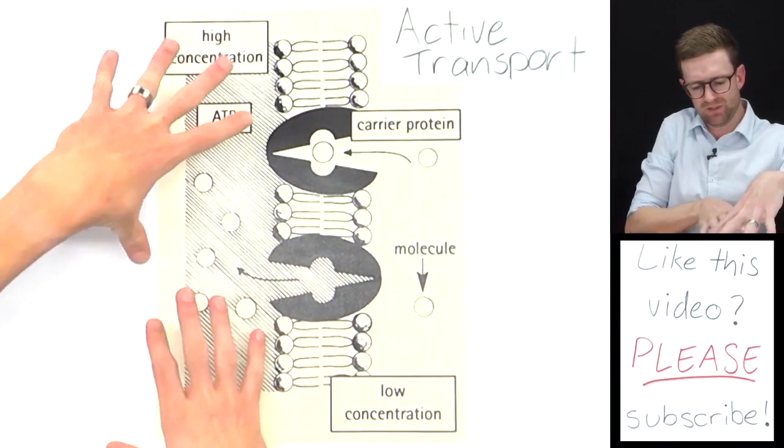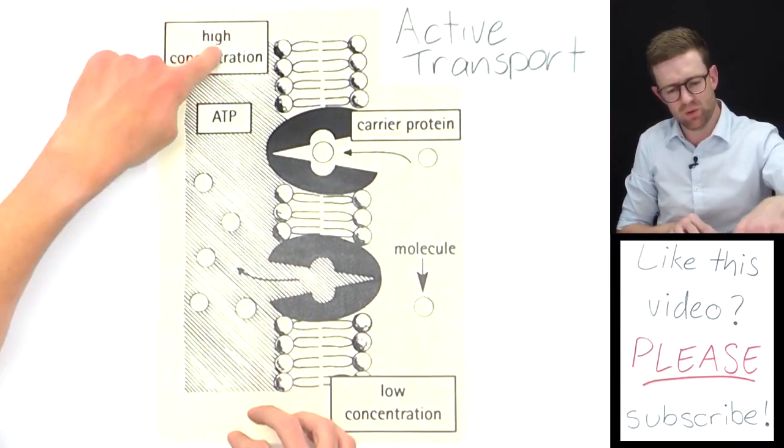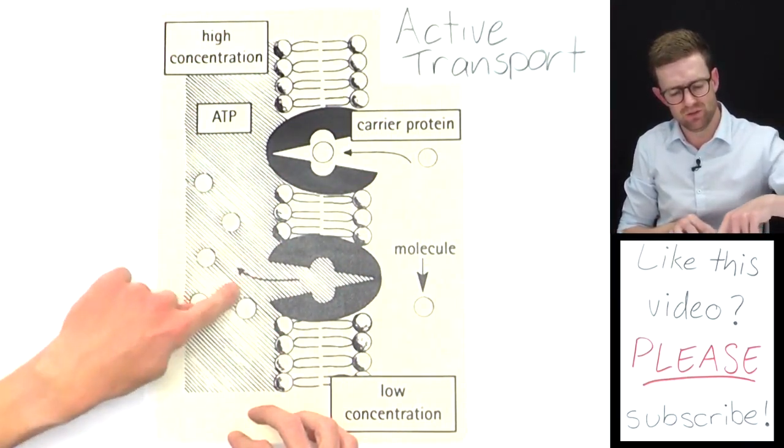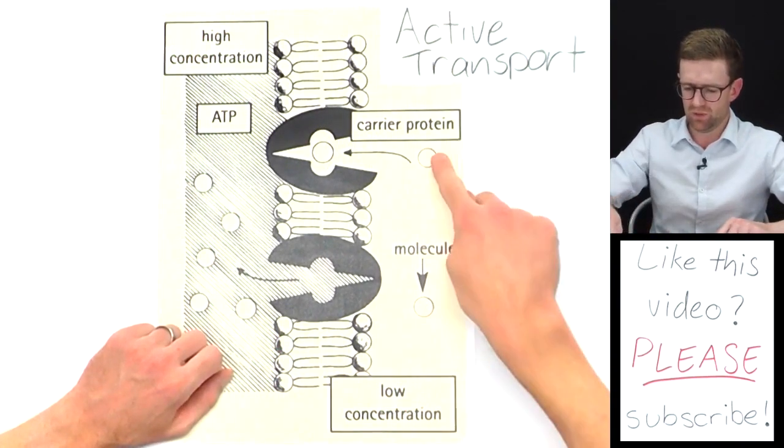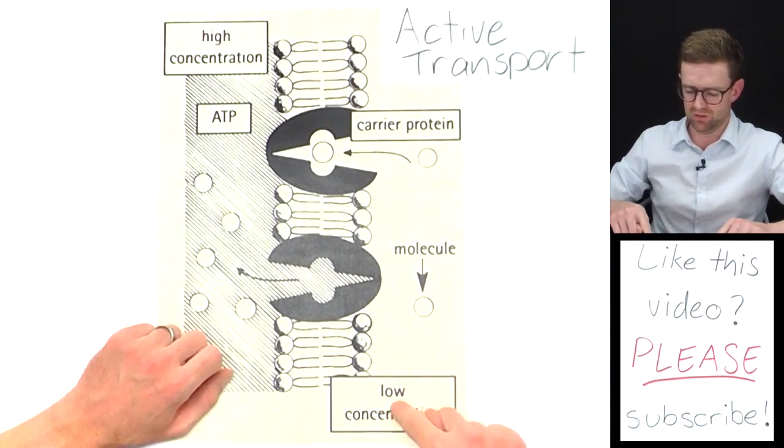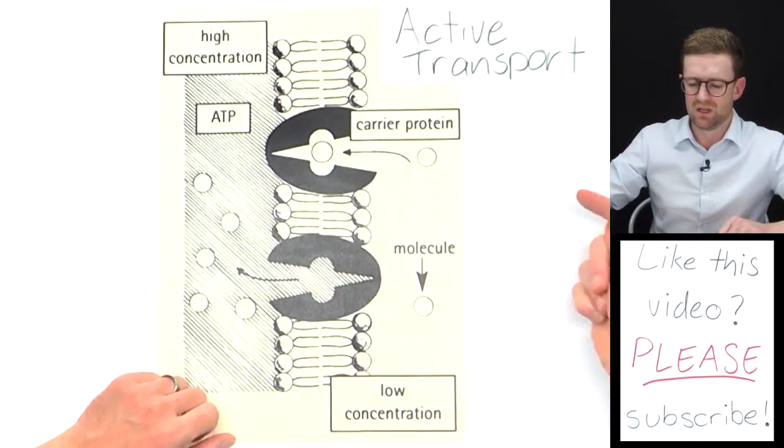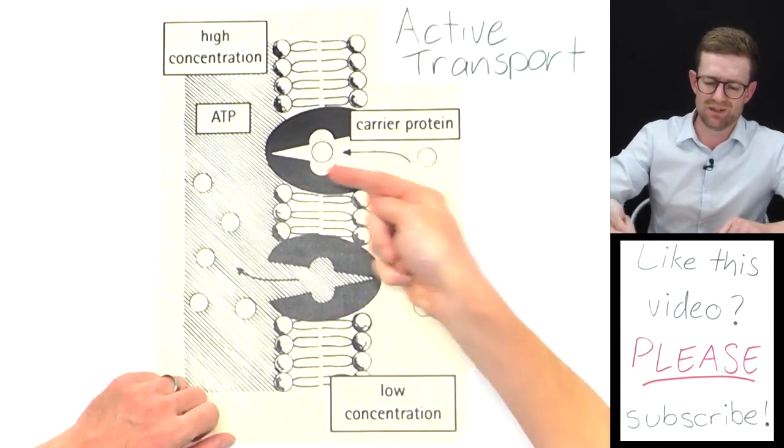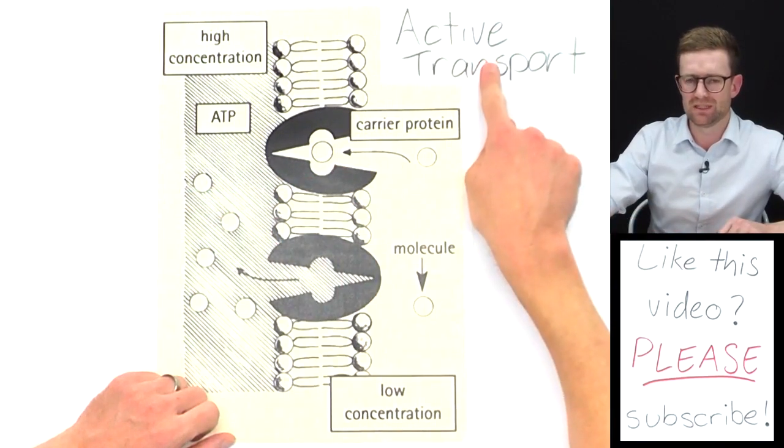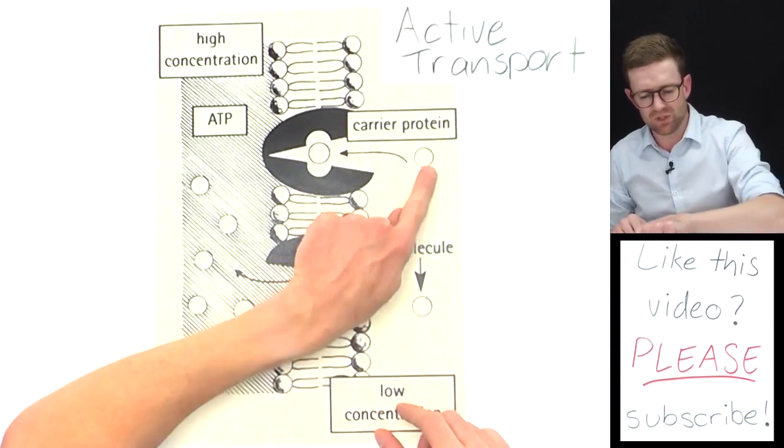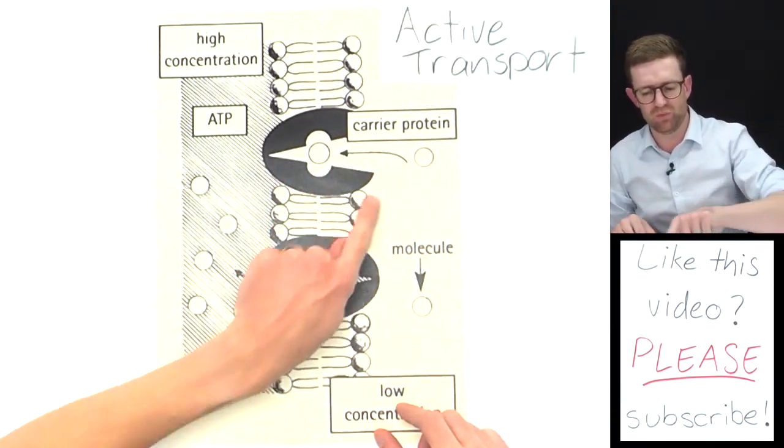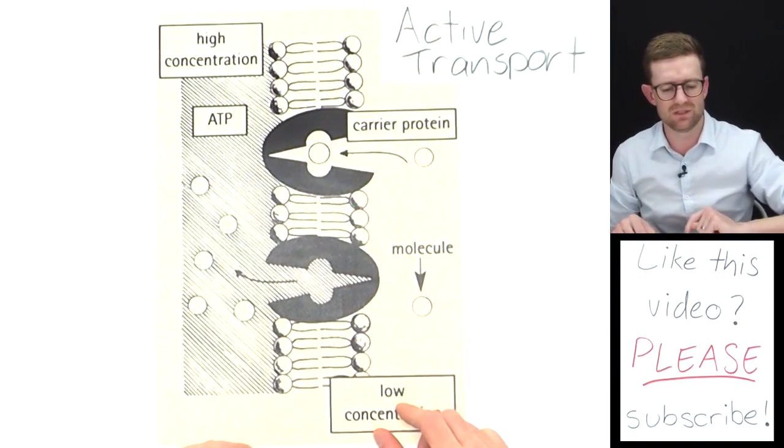Here we've got inside our cell where we have a higher concentration of whatever this substance is. Outside the cell, we have a low concentration, but we're moving it into the cell. That's why this is an example of active transport. It's these carrier proteins which are helping to do that movement.